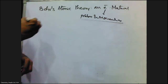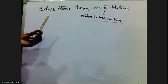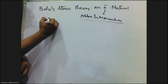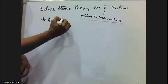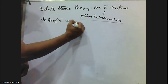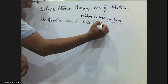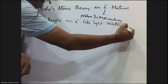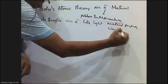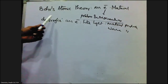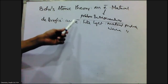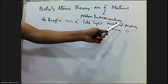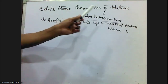But according to De Broglie's dual nature of matter — the dual nature of the electron — De Broglie proposed that an electron, like light, behaves as both a material particle and as a wave. So according to De Broglie, an electron behaves both as a material particle and as a wave particle.